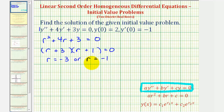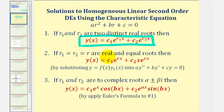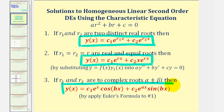Notice how we have two distinct real roots, which helps us determine which form we use for the general solution. For a quick review: if the characteristic equation has two distinct real roots, we use the first form of the general solution. If we have two real but equal roots, we use the second form. And if we have complex roots, we use the third form. In our case, we're using the form from number one.